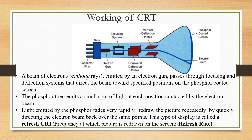A beam of electrons, called cathode rays, is emitted by an Electron Gun. It passes through the Focusing and Deflection System, which directs the beam towards specified positions on the phosphor-coated screen.